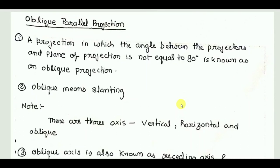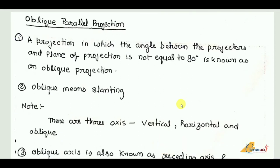Hello friends, welcome to the video lecture series on computer graphics. In today's session we are going to talk about oblique projection. We have already covered two videos on projection, and this is my third part on projection. In the last session we talked about parallel projection. There are two broader categories: parallel projection and perspective projection. Parallel projection is further categorized into oblique and orthographic. So without wasting time, let's start the session.